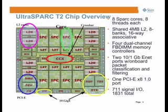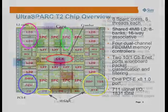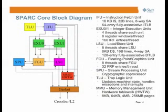We offer the processor at 1.2 and 1.4 gigahertz in systems with 1U, 2U, blades, and a whole range of other servers. On the die picture, you can see the crossbar in the middle — yellow is 10 gig, purple is PCI Express, and then four L2 caches around the outside.